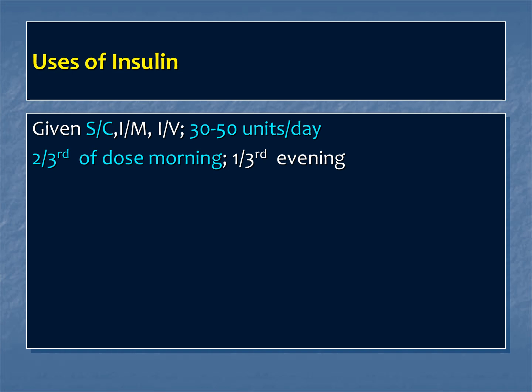Let us summarize the use of insulin. The common route of administration is subcutaneously, but according to requirement or emergency we can use intramuscular or intravenous. The common units vary from 30 to 50 units per day. Usually two-thirds of the calculated total daily dose is given in the morning and one-third in the evening.